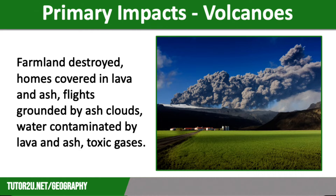Ash clouds can ground flights as it becomes too dangerous to fly through, with poor visibility and the risk of ash getting into the engines. The most famous example of this was the eruption of Eyjafjallajökull in Iceland in 2010, which caused enormous disruption to air travel as it grounded flights across Europe for several days. Volcanic eruptions will also result in water supplies becoming contaminated.